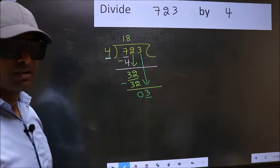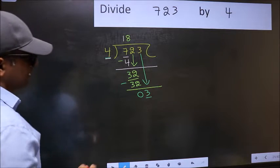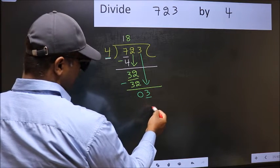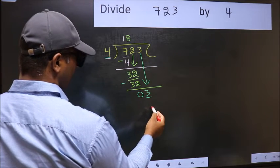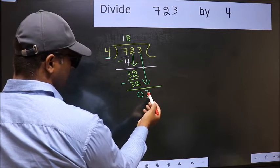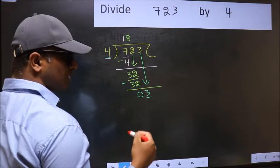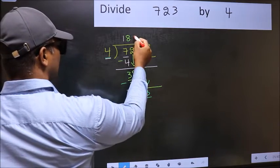Instead, what you should think of doing is, what number should we write here? If I take 1 here, I will get 4. But 4 is larger than 3. So what we should do is, we should take 0.